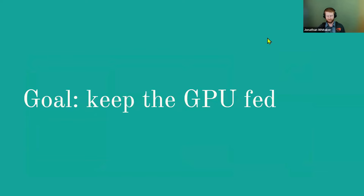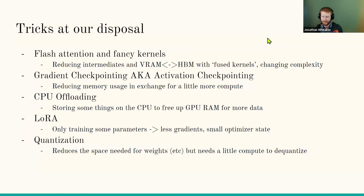The goal in training is to keep the GPU fed. If you kept the whole model on a hard drive and copied it layer by layer onto the GPU to do operations, then copied it back, that would be much slower than fitting the model in GPU RAM. So we have lots of tricks to keep things closer to the metal.